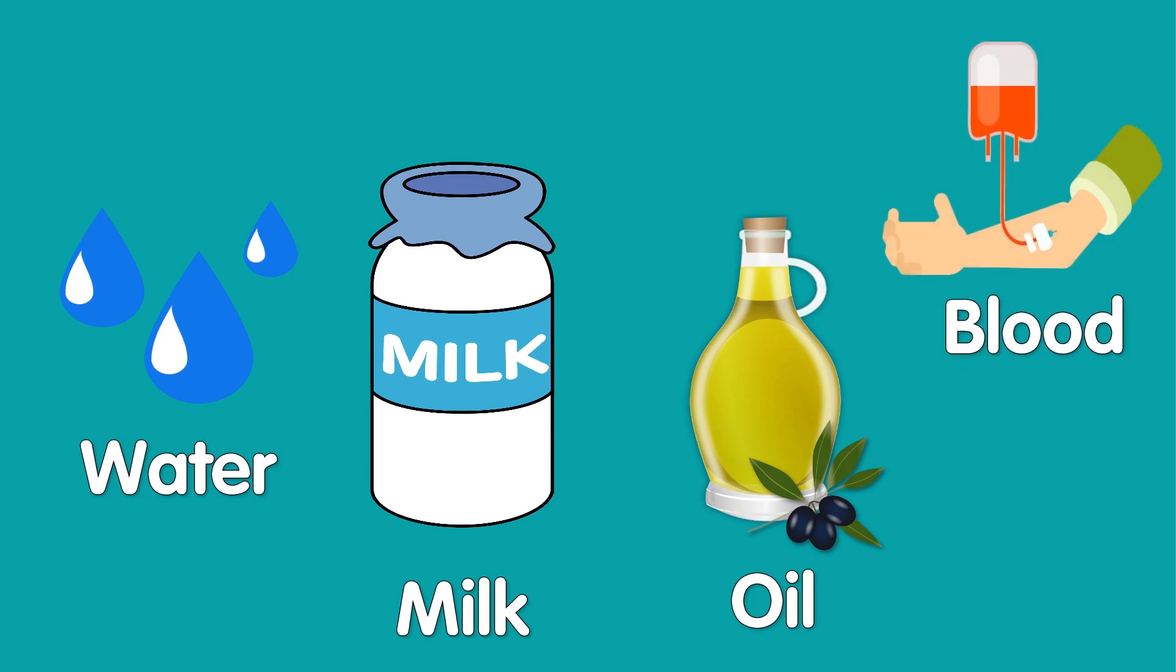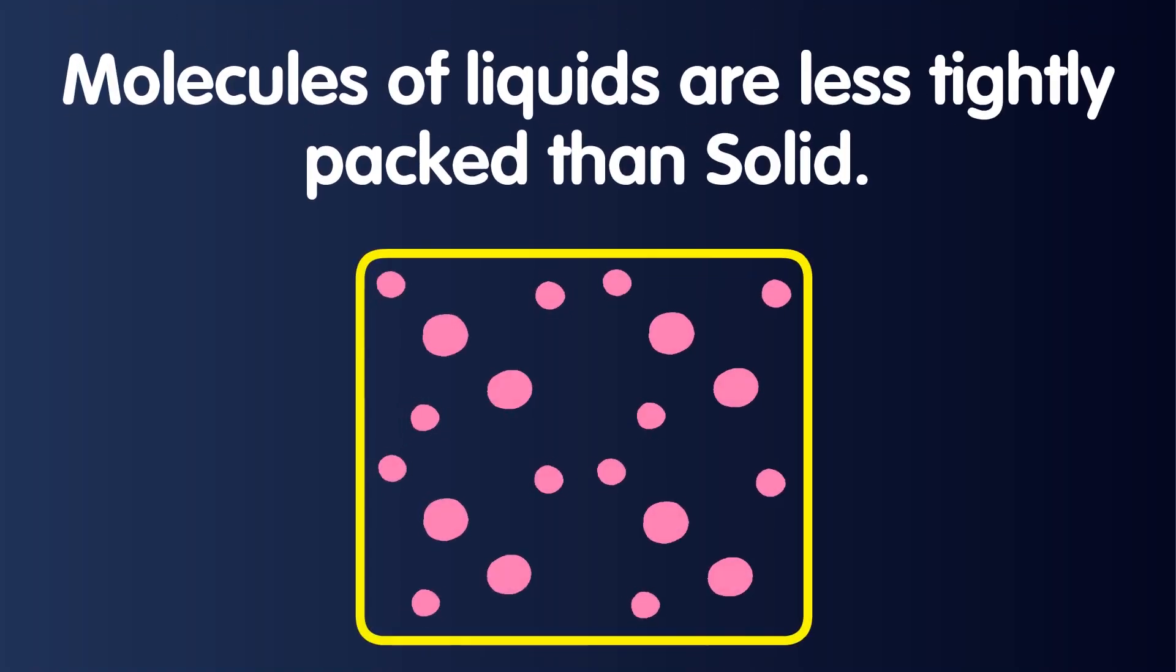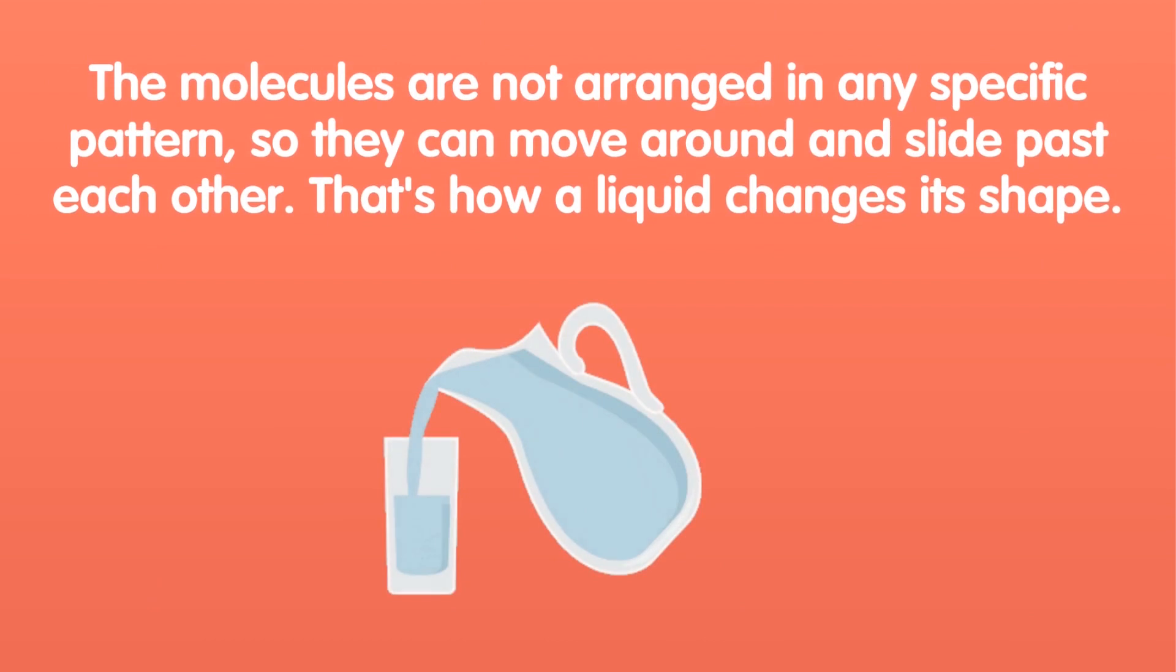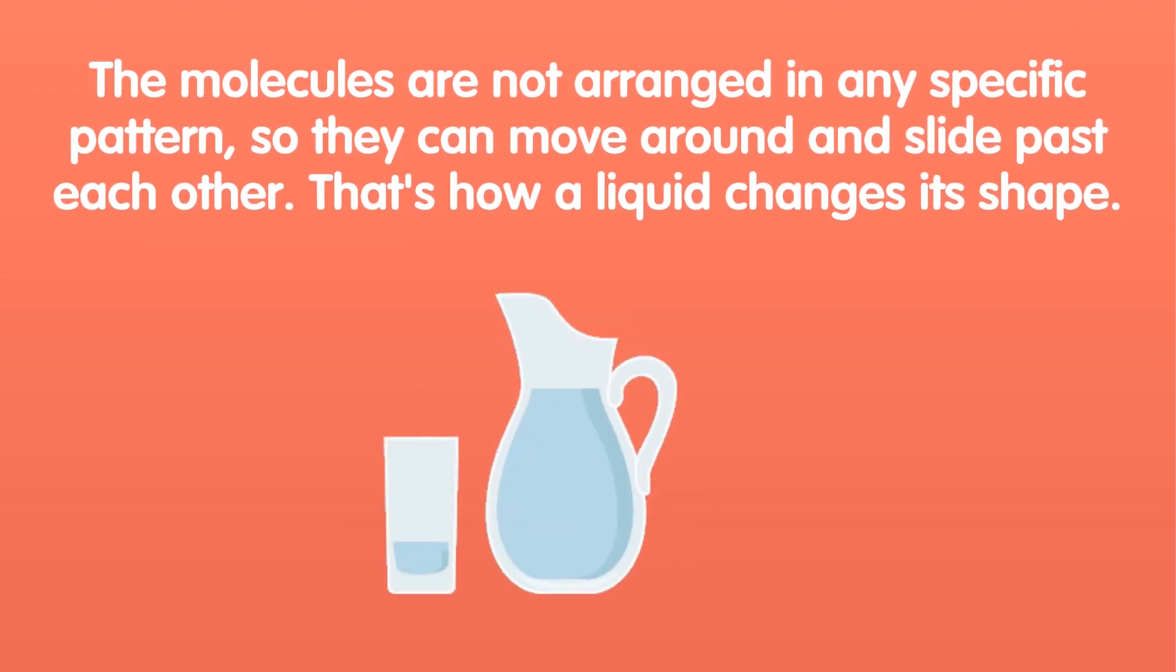Molecules of liquids are less tightly packed than solids. The molecules are not arranged in any specific pattern, so they can move around and slide past each other. That's how a liquid changes its shape.